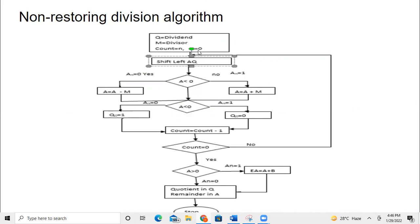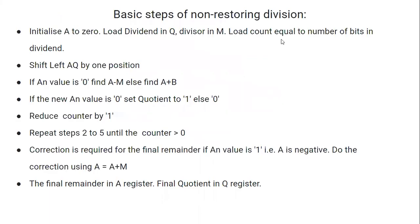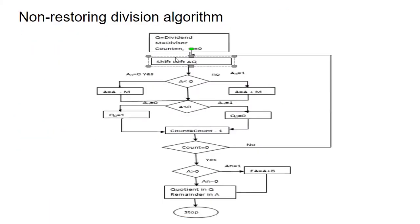Here A is equal to 0 — that is the A register is initialized to zero. Now together we are going to consider the A and Q registers and shift them one position left. If A has 5 bits and Q also has 5 bits, together we consider it as 10 bits and shift them left one bit.